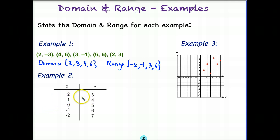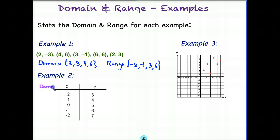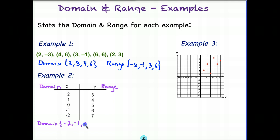Another way that you can see points represented is in a table. It's pretty easy to pull off the domain and range here, because X represents the domain and Y represents the range — it's nicely organized for us already. We can still list it as before, going from smallest to greatest. So: negative 2, negative 1, 0, 1, 2 for our domain. Then our range, again smallest to greatest: 3, 4, 5, 6, and finally 7.